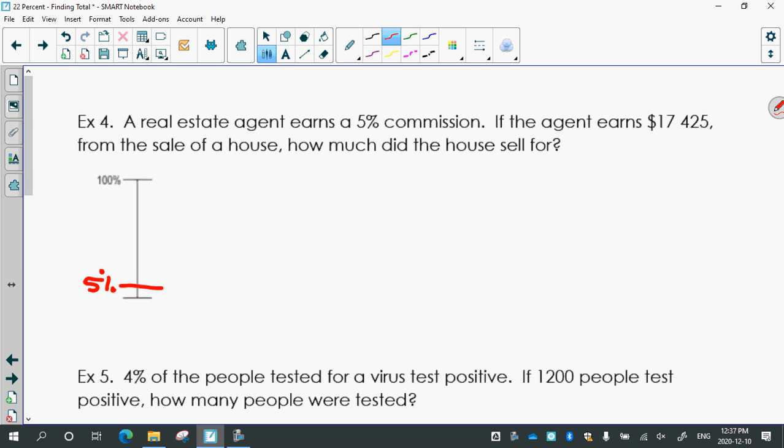So 5%, I saw lots of people's diagrams with the five way down near the bottom, which was awesome. That'll help you make sure your number makes sense. And it's 17,425. And then x will be how much the house costs. So they made 17,425. How much does the house cost? We know it's going to be a lot more than that because house prices are pretty high right now. So 100 over 5 equals x over 17,425. That's the case of what you made from the diagram.